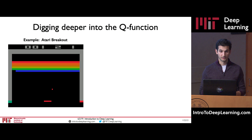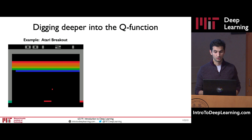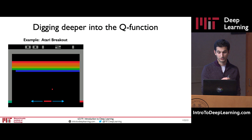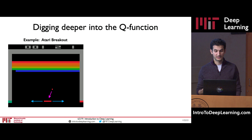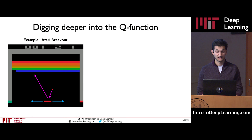Let's start with value learning and dig deeper into the Q function, since it's the foundational basis of value learning. I'll introduce the Atari Breakout game. The objective is that you have a paddle on the bottom that can move left or right — that's the agent. There's also a ball coming towards the agent. The objective of the paddle is to move in ways that reflect the ball back towards the top of the screen, breaking off the colored blocks at the top. You lose when the ball passes the paddle.